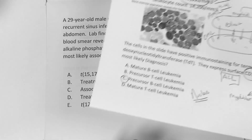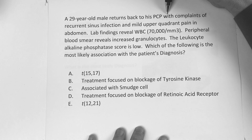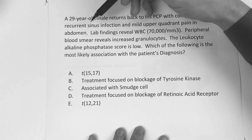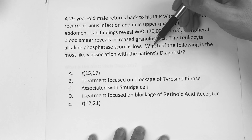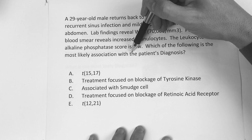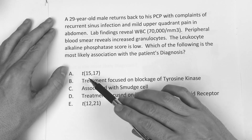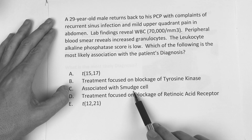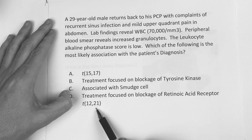Now the next question. A 29-year-old male returns to his primary care with complaints of recurrent sinus infections and mild upper quadrant abdominal pain. Lab findings reveal a white blood cell count of 70,000. Peripheral blood smear reveals increased granulocytes. The leukocyte alkaline phosphatase score is low. Which of the following is the most likely association with this patient's diagnosis? Is it A, translocation 15-17? B, treatment focused on blockage of tyrosine kinase? C, associated with smudge cell? D, treatment focused on blockage of retinoic acid receptor? Or E, translocation 12-21?